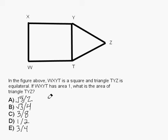Okay, so as I've taught in the past, the most important thing we have to do at first is underline key math words. So WXYT is a square, and triangle TYZ is equilateral. WXYT has an area of 1, and the question is, what is the area of the triangle? So we want the area of this triangle.